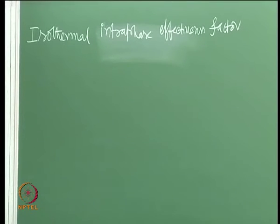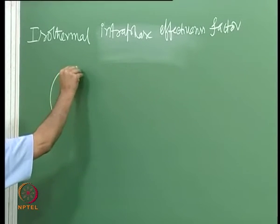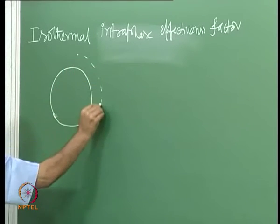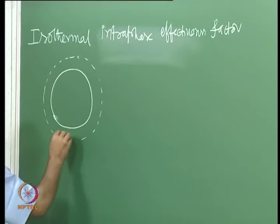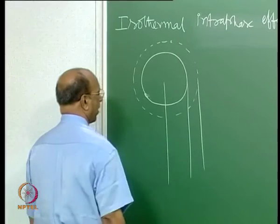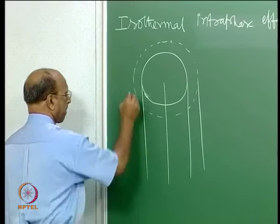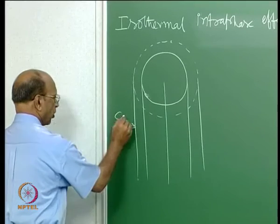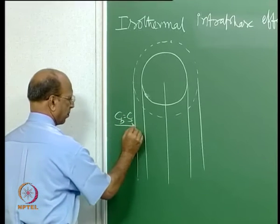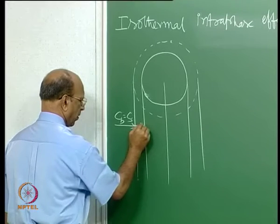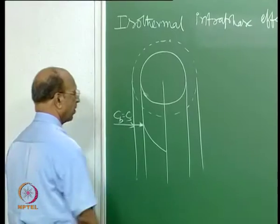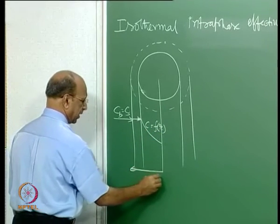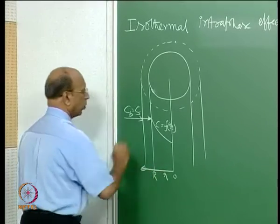Intraphase means inside the particle. We start with the diagram. Of course there is a film outside; this is C_b, also equal to C_s, because there is no film resistance. From then onwards it goes into the particle, decreasing. So C is a function of r, where r is increasing, with 0 at center and capital R at the surface.